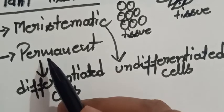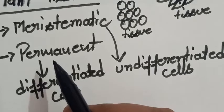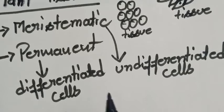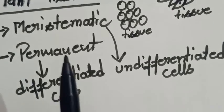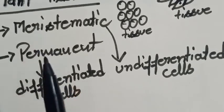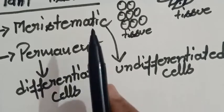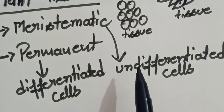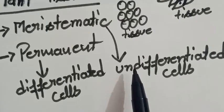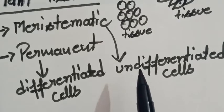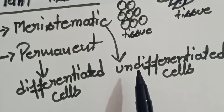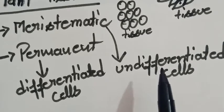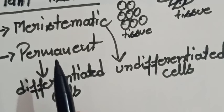Differentiated cells, on the other hand, lose the capability of division and hence form a permanent structure, known as permanent tissues. So plant tissues are divided into two parts: meristematic tissues, whose undifferentiated cells are dividing in nature and can form further structures of the plant, and permanent tissues.